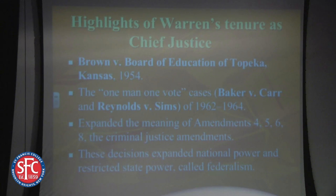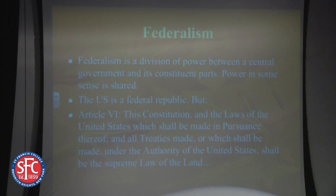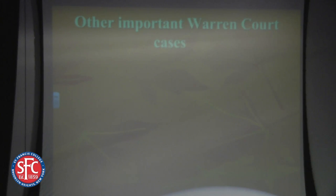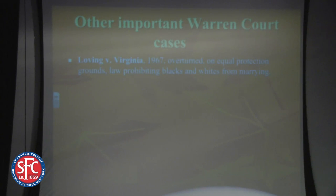The Warren Court expanded the meaning of Amendments 4, 5, 6, and 8, and these decisions expanded national power and largely restricted state power — the thing called federalism. What Warren did was so dangerous in some sense, so controversial. As much as we like cases like Mapp and Miranda, these cases are enormously controversial because they're not clearly found in the text of the Constitution, and so you have to gain support for your opinions even as you make them.